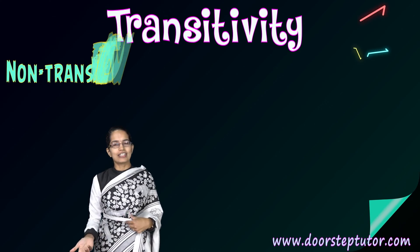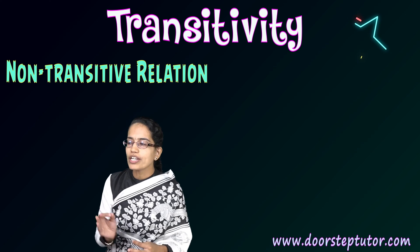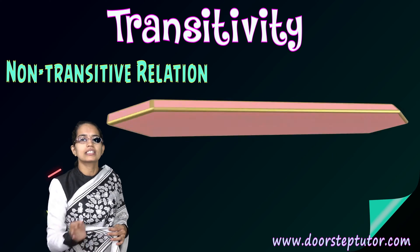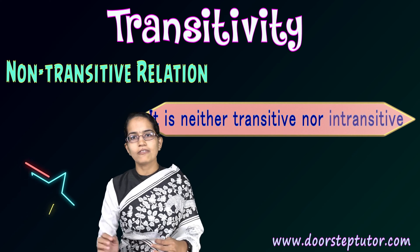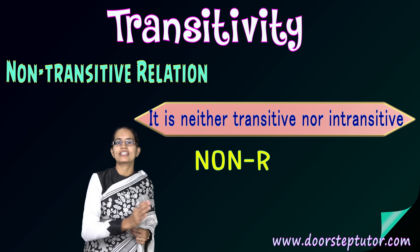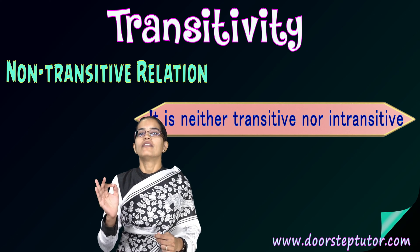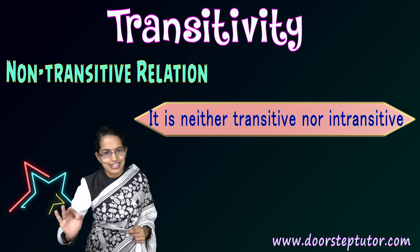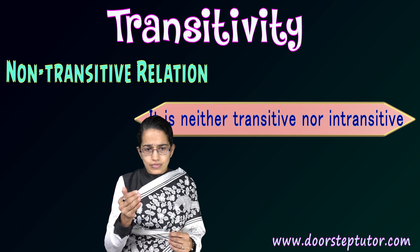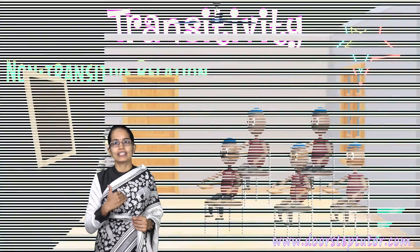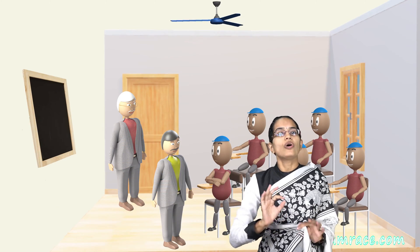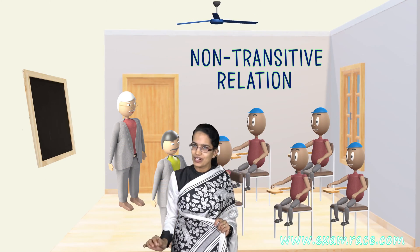The next is non-transitive, which means it is neither transitive nor intransitive — similar to non-reflexive and non-symmetric. For example, if I respect my teacher and my teacher respects his teacher, there is no logical sequence that I respect my teacher's teacher. So this is a non-transitive relation.